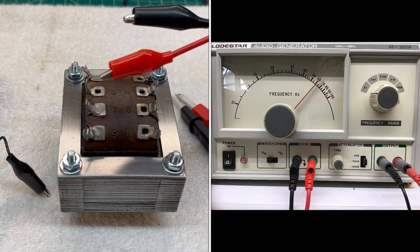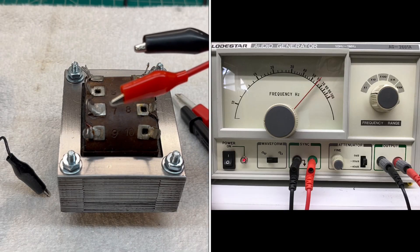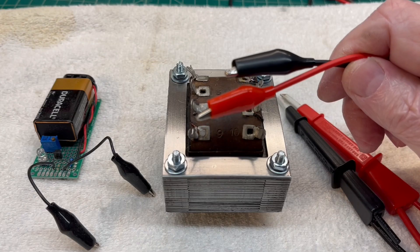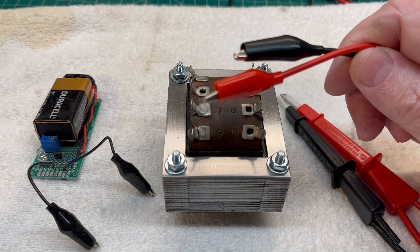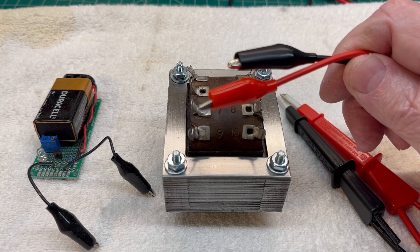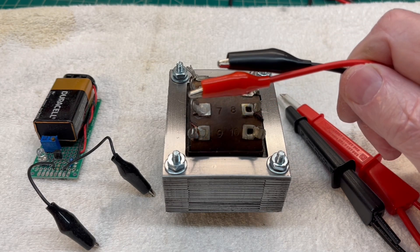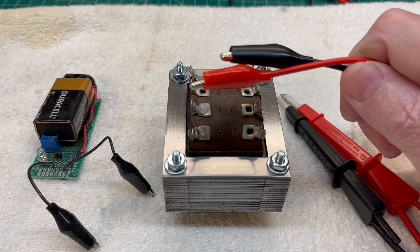Then we'll use the audio signal generator to generate a sine wave around 60 Hertz or so, hook up to the primary, and extrapolate the AC voltage across the other windings, doing some basic math just for reference.